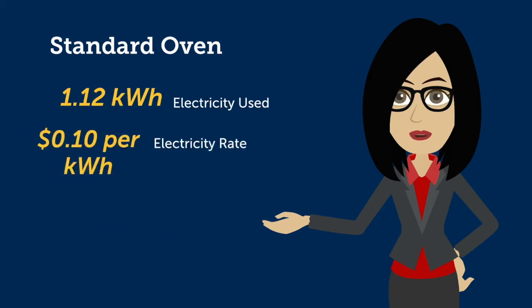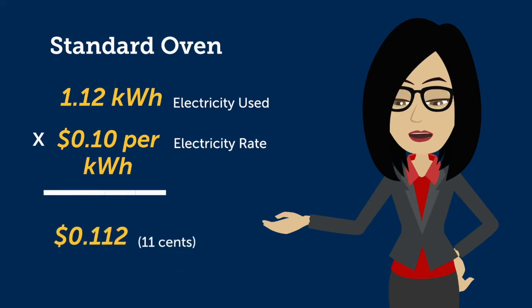Using the same rate of 10 cents per kilowatt hour, we can see that it costs 11 cents to bake your pizzas in a standard oven.